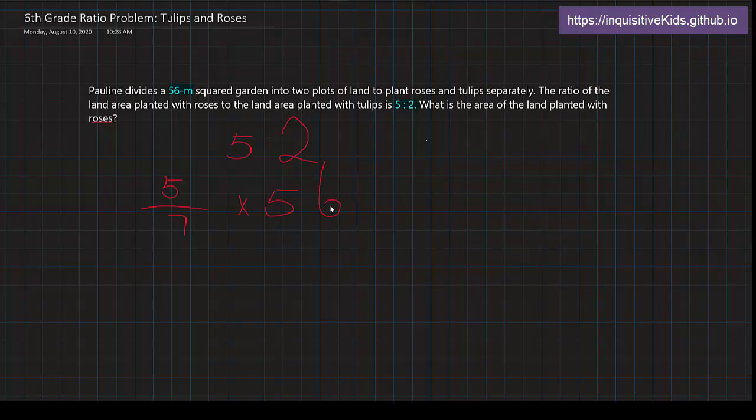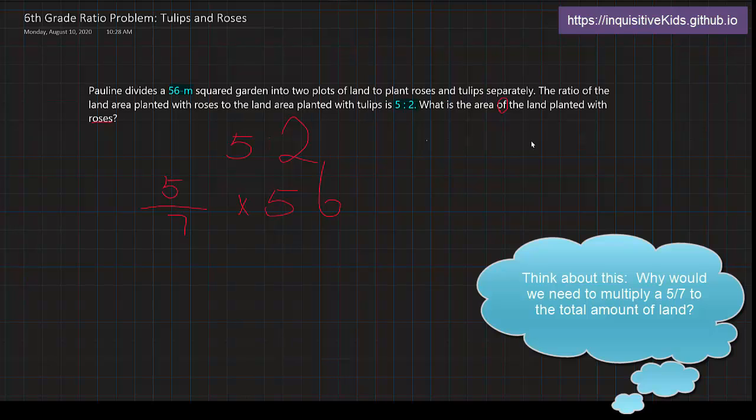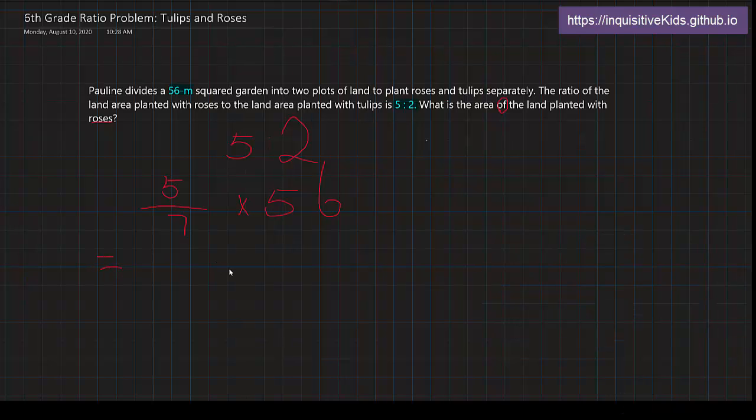Remember, when there's the keyword of, we usually know that of is referring to multiplication. We multiply, and then all we have to do is simplify this equation. 5 over 7 times 56, we can simplify this and cross this out, and turn this into an 8. Then it becomes 5 times 8, which is 40. And there is our answer: 40 meters squared of the garden is planted with roses.